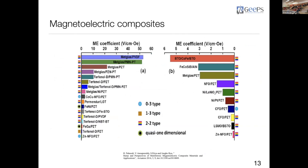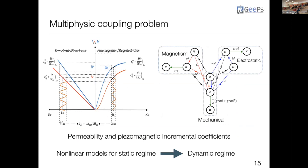Given the many possible magneto-electric composite configurations and performance parameters, it is necessary to develop specific numerical tools to investigate each composite. The magneto-electric composite has a piezoelectric and a magnetostrictive element. The piezoelectric has linear behavior, while the magnetostrictive element has non-linear behavior. The coupling between them is elastic — the magnetoelastic phenomenon induced by the magnetic field in the magnetostrictive layer produces a voltage in the piezoelectric element.